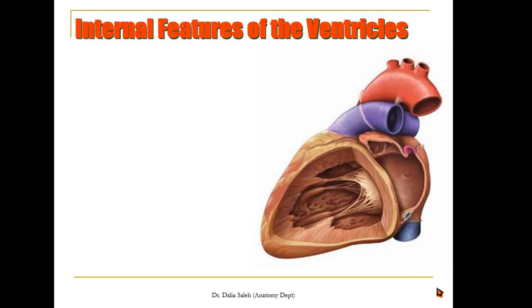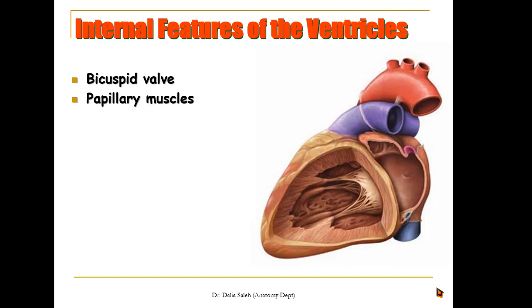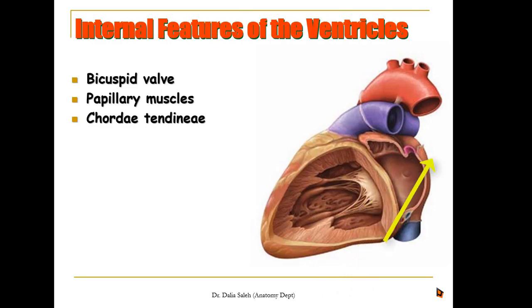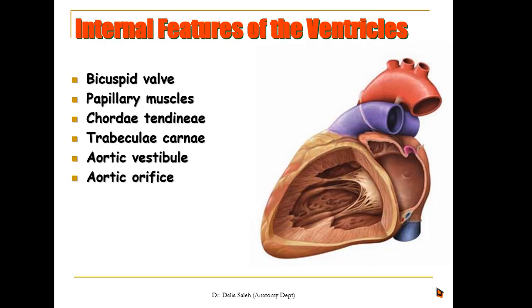The inside of the left ventricle doesn't differ much from the right ventricle, except it has a much thicker wall. The valve separating the left atrium from the left ventricle is called the bicuspid or mitral valve, made of two cusps — anterior and posterior. At the base of the left ventricle there are two groups of papillary muscles — anterior and posterior — giving attachment to chordae tendineae attached to the cusps of the mitral valve, preventing prolapse back into the left atrium during left ventricular systole. The wall also contains trabeculae carneae, and the outflow part of the left ventricle is called the aortic vestibule, lying just below the aortic orifice, guarded by the aortic valve.